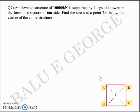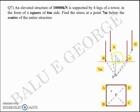Quite analogous to the previous question. The difference is that in plan it's not a triangle but a square with 6m sides: A, B, C, D. Total load is 10,000kN supported on four legs. You are asked to compute the stress at a point 7m below the center of the entire structure, which means the point where the diagonals meet.